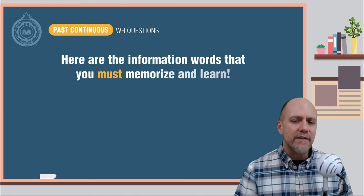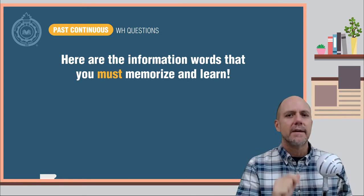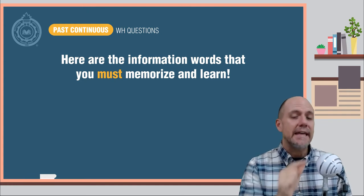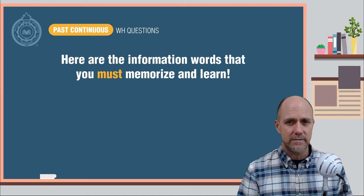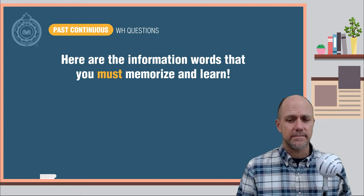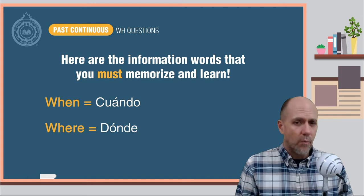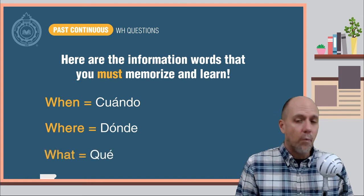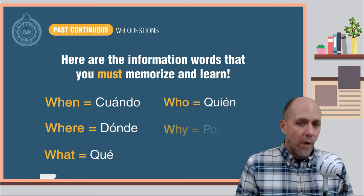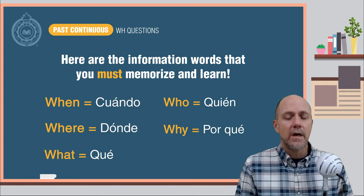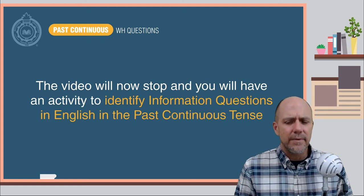Here are the information words in English that you must learn and memorize. Remember from your study in Unit 4 of the past tense with information questions, the following words. When equals cuando, Where equals donde, What equals que, Who equals quién, Why equals por qué, Which equals cual.